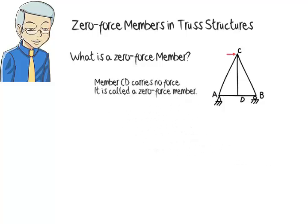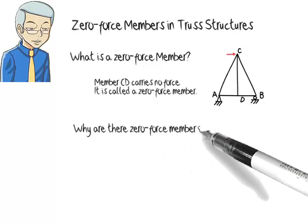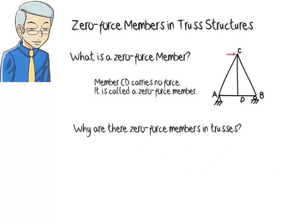Why are there zero-force members in trusses? Naturally, one might question the rationale for having such members in a structure. If a truss member does not carry any force, why have it in the first place?